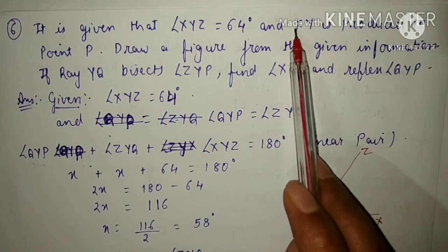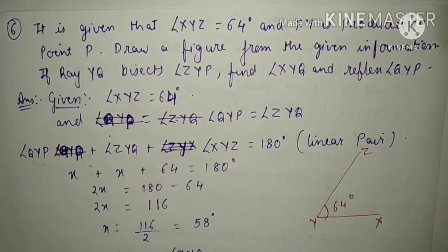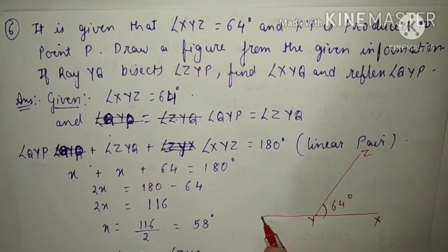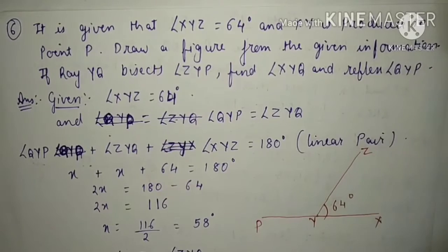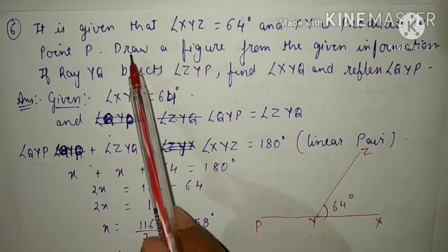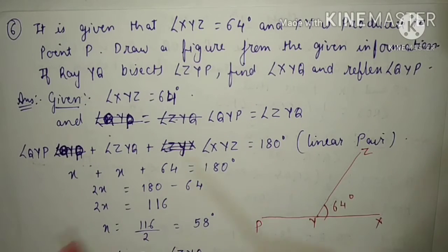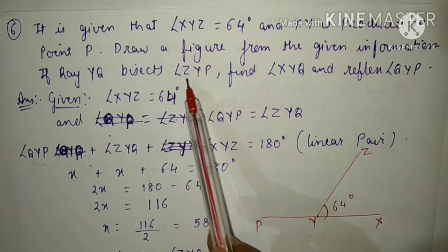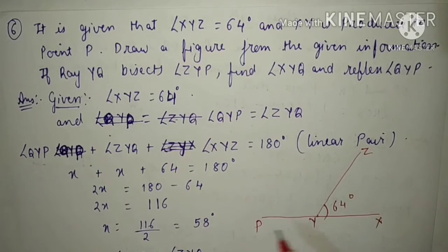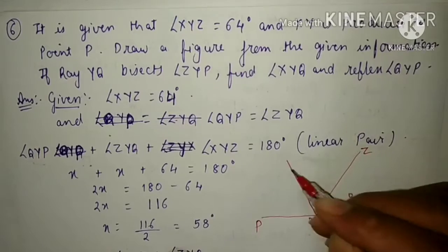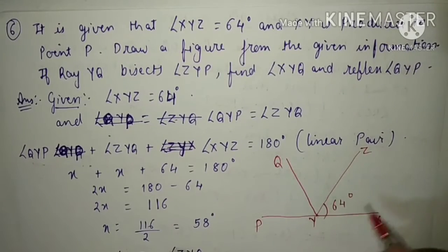Next, what is given: XY is produced to P. We produce XY to P like this, and this is our point P. If ray YQ bisects angle ZYP — this is angle ZYP — then ray YQ, where this is Q, is bisecting angle ZYP.